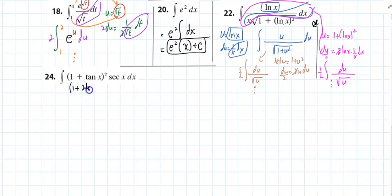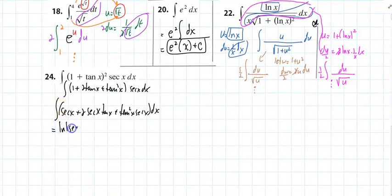I could foil this. I could say that's 1 plus twice the tangent of x plus tangent squared of x. So that is the integral of secant of x plus twice the secant of x tangent of x plus tangent squared of x secant of x dx. We're going to have three integrals. This is one of them. That's natural log of secant of x plus tangent x. If you take the derivative of the result, you get secant tangent. That is secant of x.